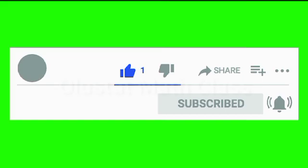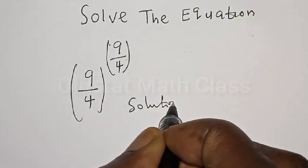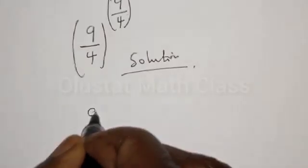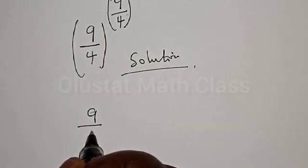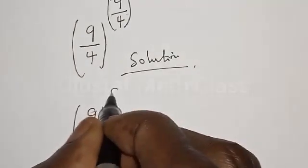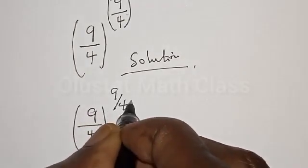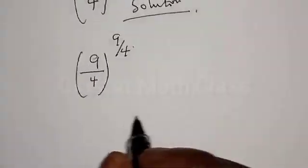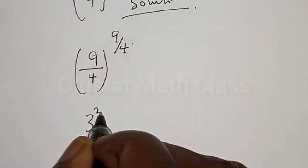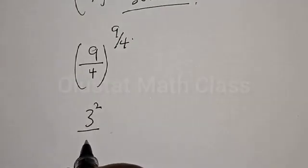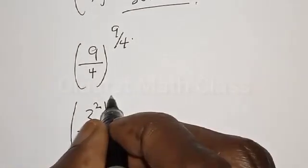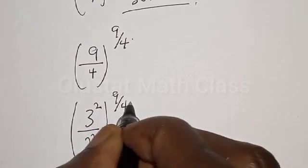Solution. We have 9 over 4 raised to the power 9 divided by 4. This can be expressed as 3 squared divided by 2 squared, all raised to the power 9 divided by 4.